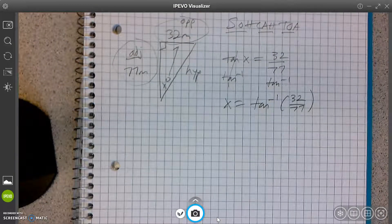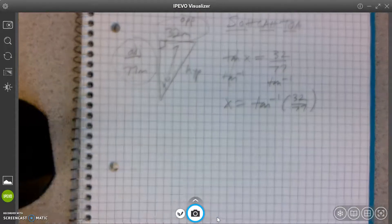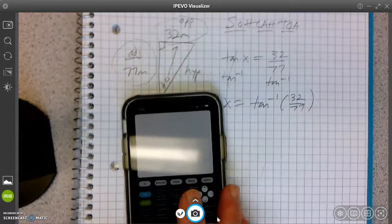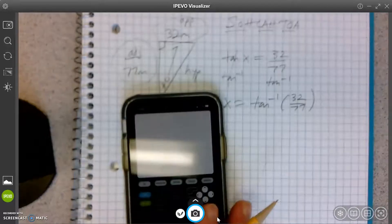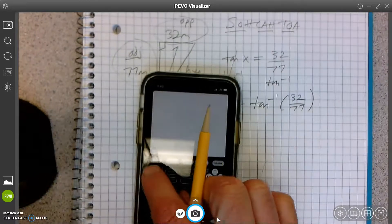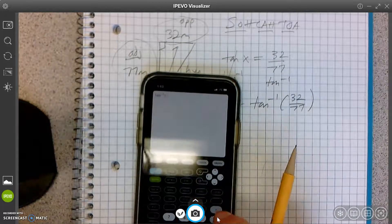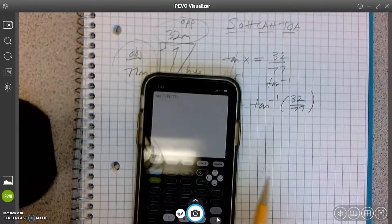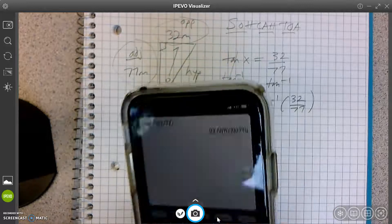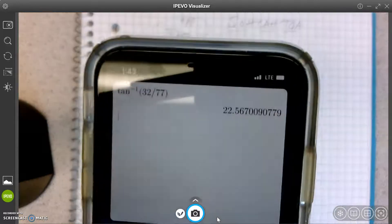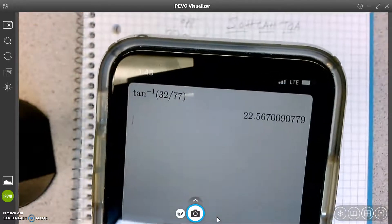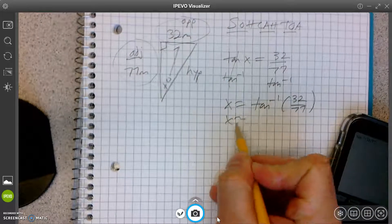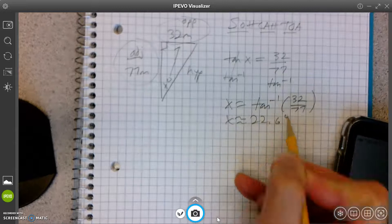Okay, now it is calculator time. Make sure you are on degree mode because I think the answer is in degrees. Yeah, it's a degree symbol right there. Okay, so I'm going to hit second tangent, 32 divided by 77, and I get about 22.5, or 22.6. So X is about 22.6 degrees.